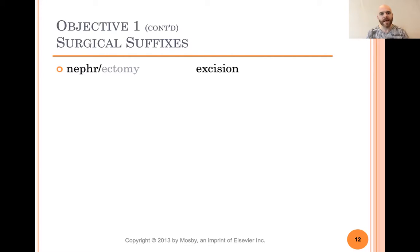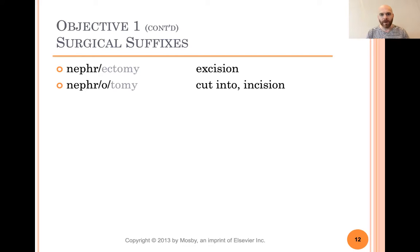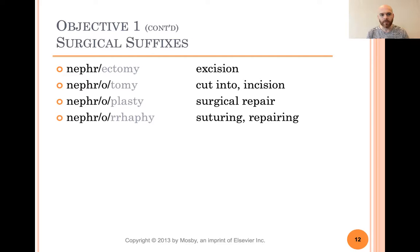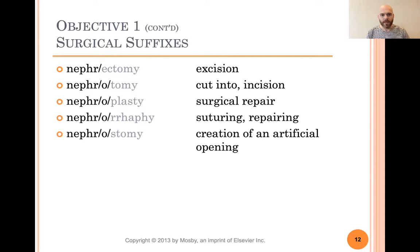And some more surgical suffixes. Nephrectomy — we remember -ectomy meant excision or removal of, so this would be an excision or removal of the kidney. Nephro means kidney. Nephrotomy means incision into a kidney. Nephroplasty means surgical repair of the kidney. Nephrorraphy means surgical suturing or repairing of the kidney. Nephrostomy — if you remember, -ostomy means an artificial opening, so this is creation of an artificial opening in the kidney.